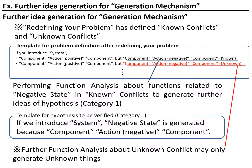You may also perform further function analysis about unknown conflicts. But because this is already an unknown conflict, even if you perform further function analysis, only unknown things are generated. I'm not sure — it's up to you whether you could do this, but in my opinion, I don't think there is much meaning in it.